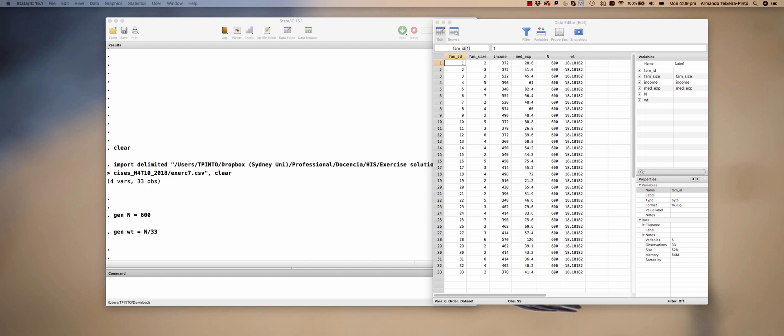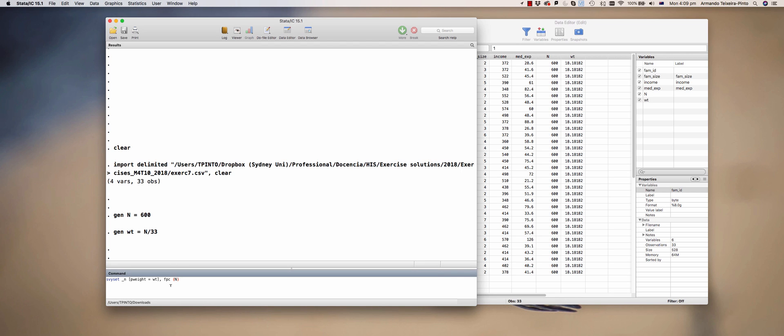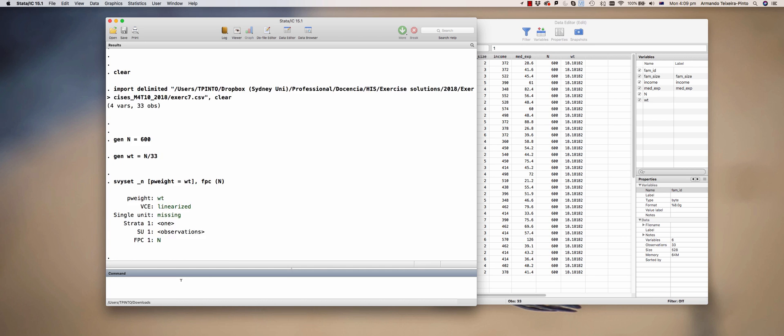I'm going to set the survey design. This is just a random sample with the weights, and then I'm going to add a correction, a finite population correction for the total sample.